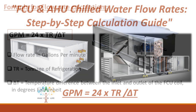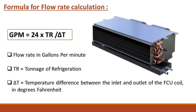First, let's talk about the formula for calculating the chilled water flow rate. The formula is: GPM = 24 × TR / ΔT, where GPM is the flow rate in gallons per minute, TR is the tonnage of refrigeration, and ΔT is the temperature difference between the inlet and outlet of the FCU coil in degrees Fahrenheit.